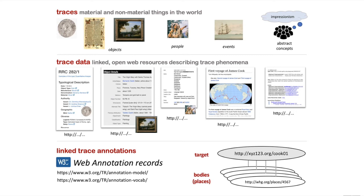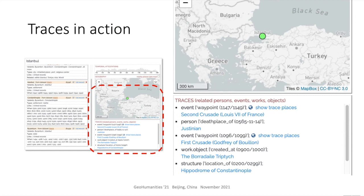Because WHG was conceived from a world historical perspective, representing connections between places is an important motivation. Trace annotations are an experimental feature and another way of representing connection. We define traces as any historical phenomenon of interest — events, people, objects, and so on. Trace data are web resources that in some way describe trace phenomena and have permanent URIs. Trace annotations are records annotating those resources with URIs for places that were related to the trace in some way. By accessioning trace annotation data, WHG is able to display on its place portal pages links to resources that concern the place — for example, journeys for which it was a waypoint, associated people, objects for which it was a find spot, and texts or images for which it is a subject.